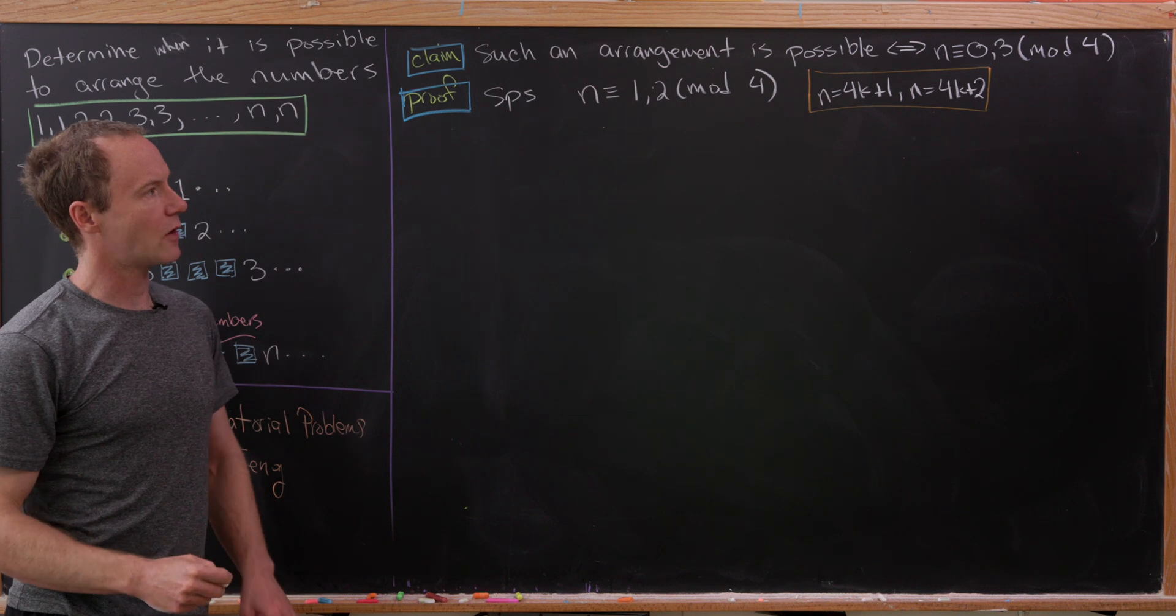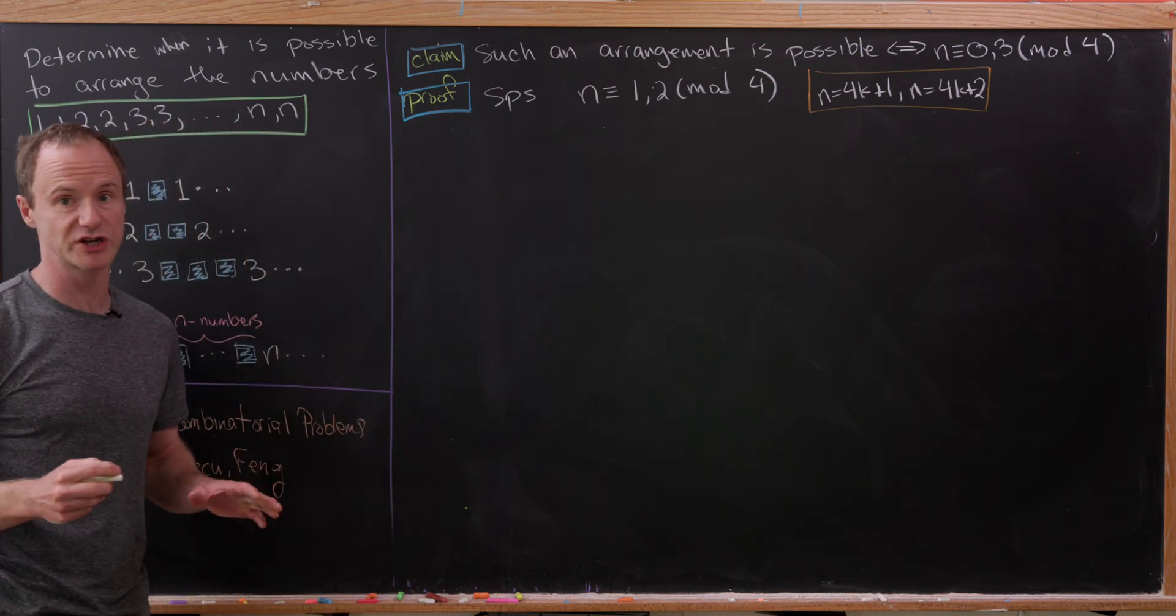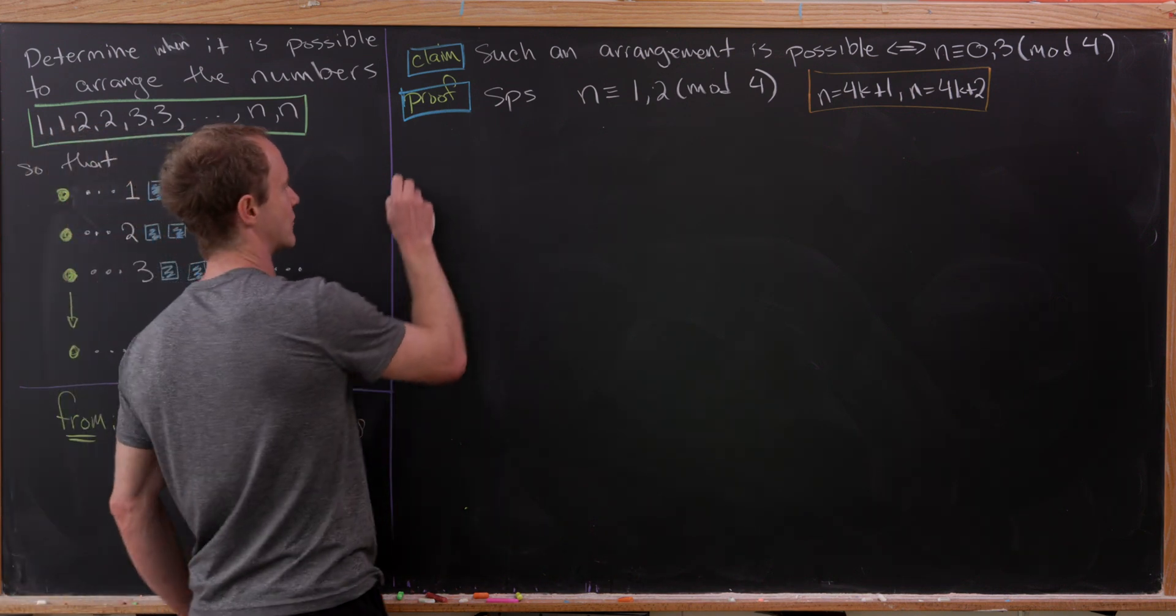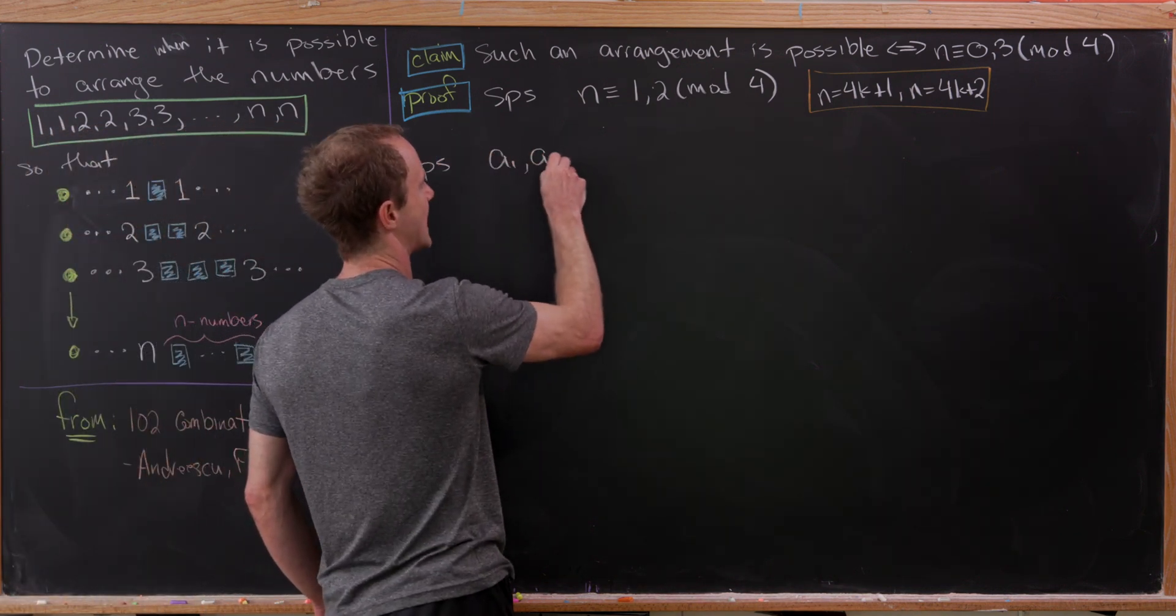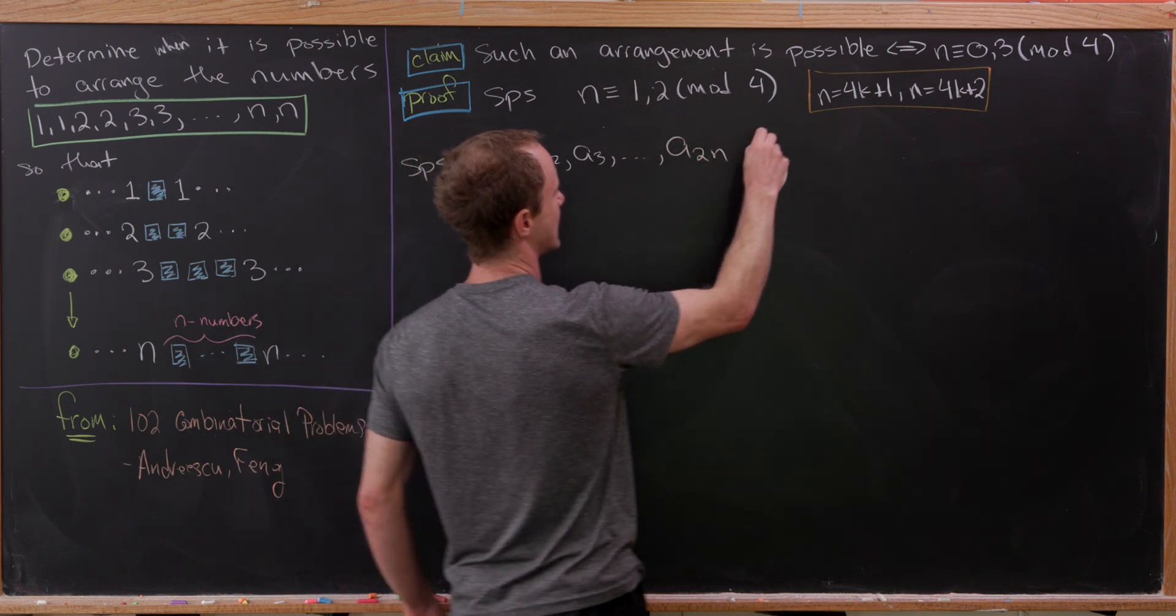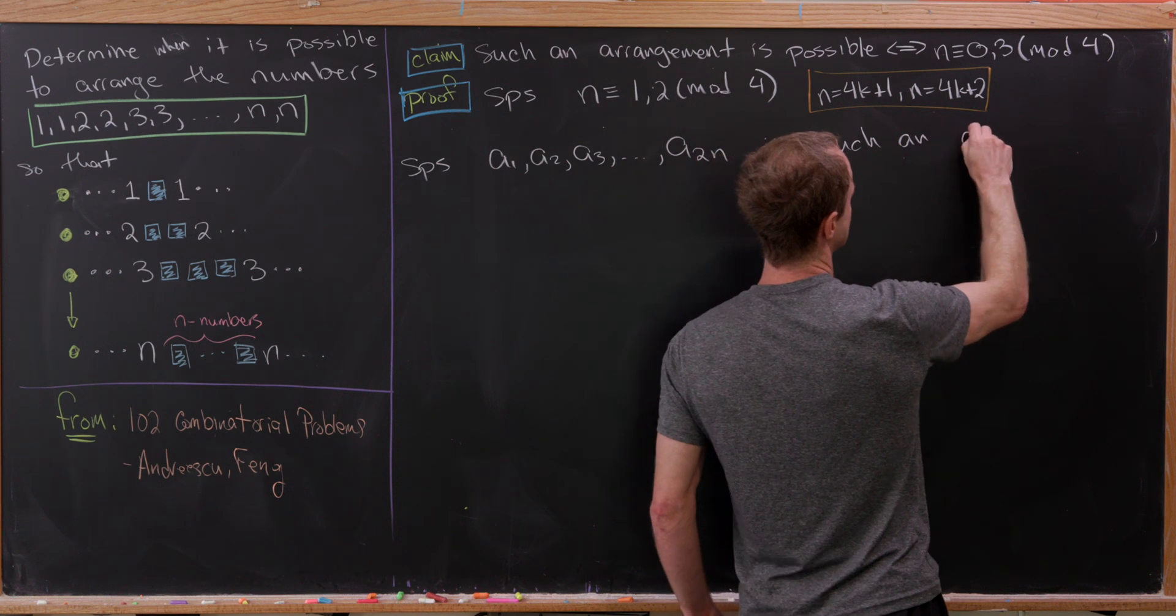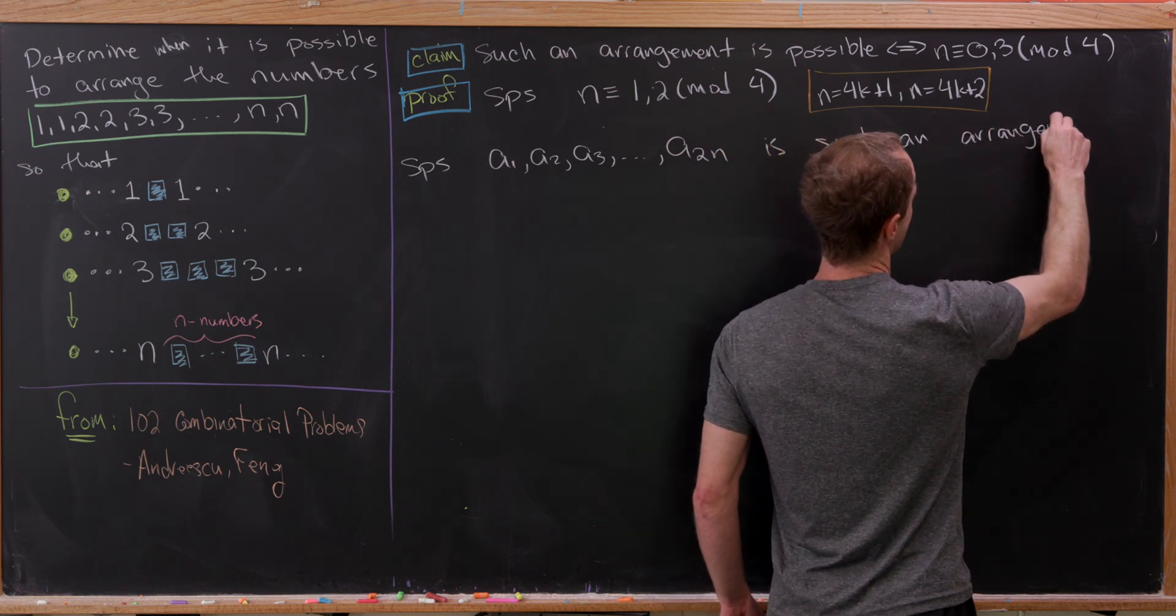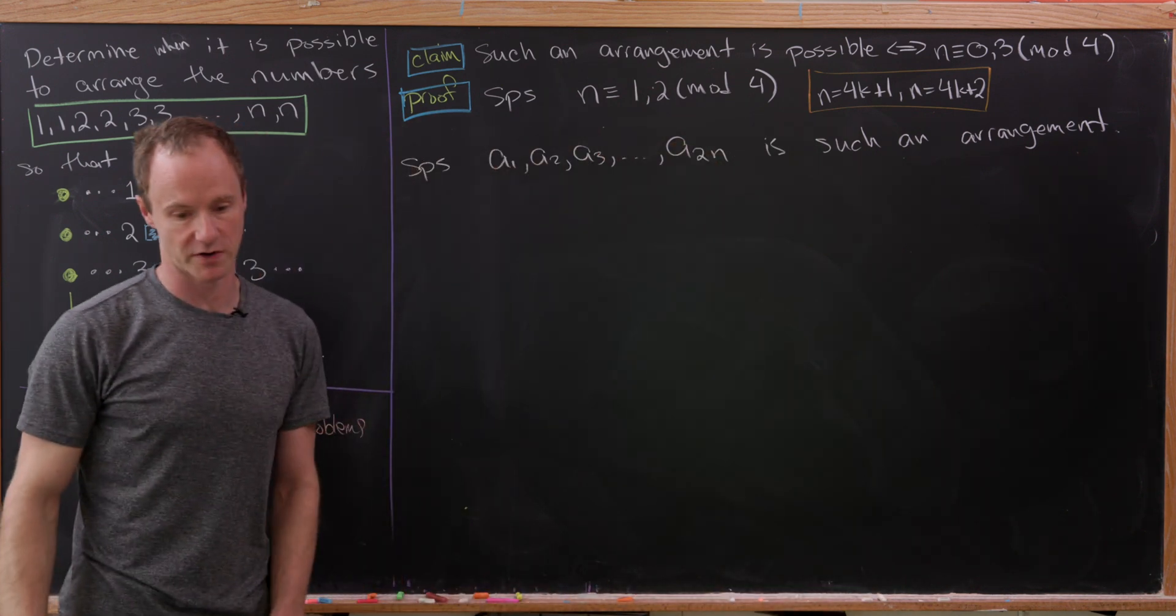Now what we'll do from here is suppose towards a contradiction that we do have an arrangement.